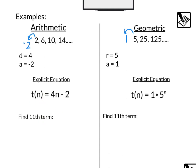If we want to find the 11th term, all we would do is take that equation and plug in 11 for n. That'd be t(11) equals 4 times 11 minus 2, which would be 44 minus 2, or 42.